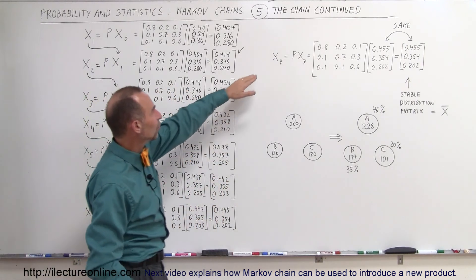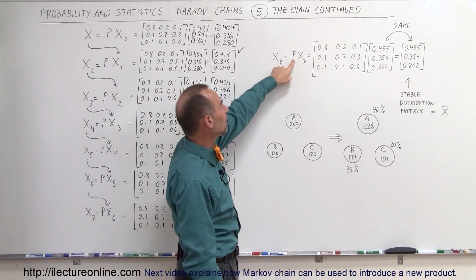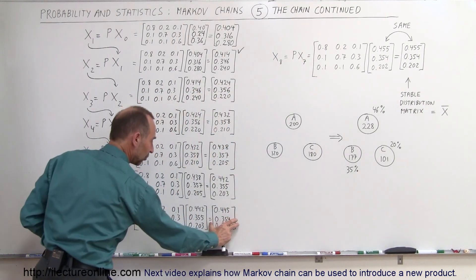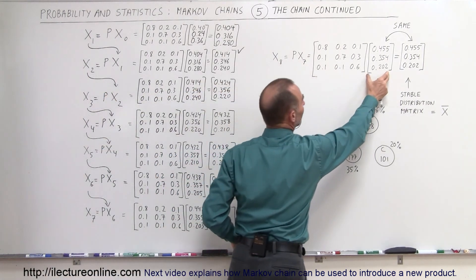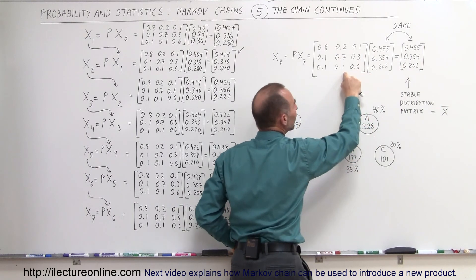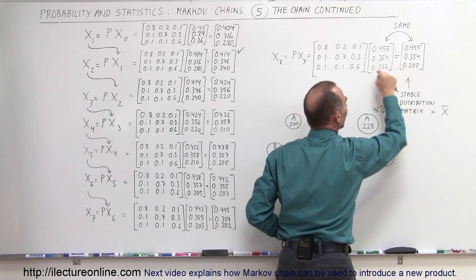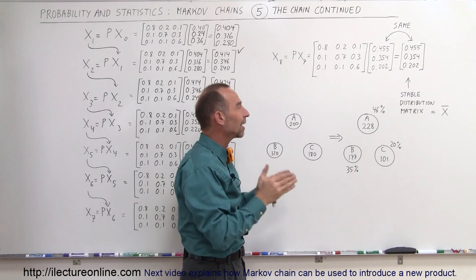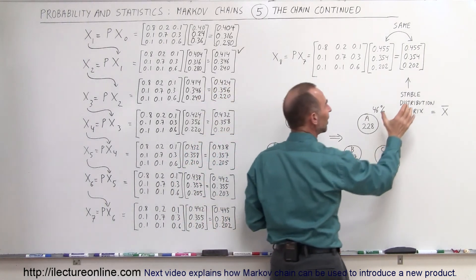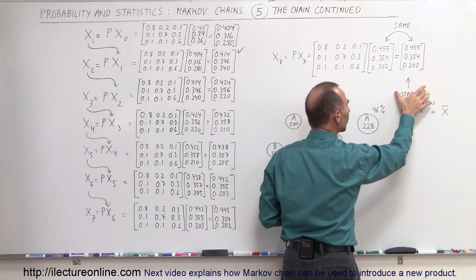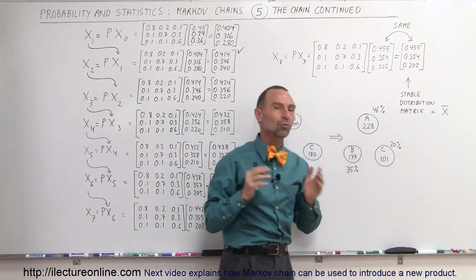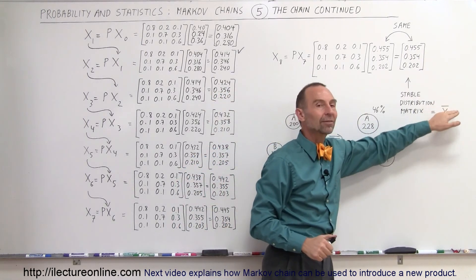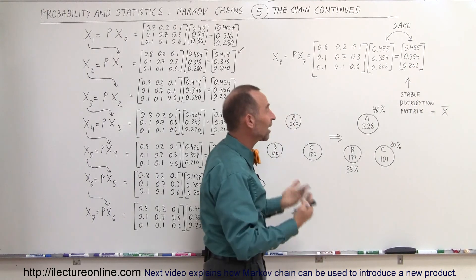When we get to the eighth iteration, we multiply the probability matrix times the state number 7 result, placed over here. We multiply that times the probability and notice we got the exact same result as before — the state matrix began to converge. We can then say the state matrix is now stable, also called the stable distribution matrix, denoted by X with a line on top, meaning it's now stable.